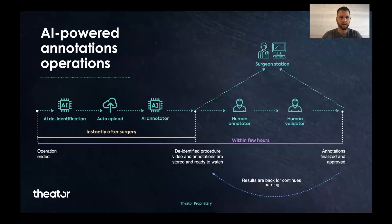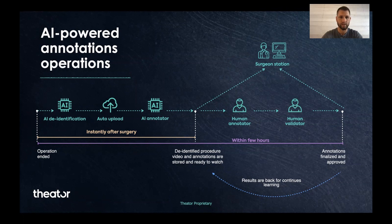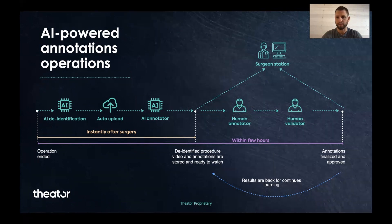This is a high level sketch of the data flow. Once the operation has ended, the video first goes through the de-identification process inside the operation room on the edge device, and then is uploaded to our cloud where it will be processed with an automatically AI annotator system. At this point, which is instantly after the surgery is done, the surgeon can review the video, see the annotations, and learn from it. In parallel, two annotators will look at the same video and those annotations and adjust them. In the end of this process, the new annotation will be propagated back to the surgeon, but also back to the system in order to support continuous learning.